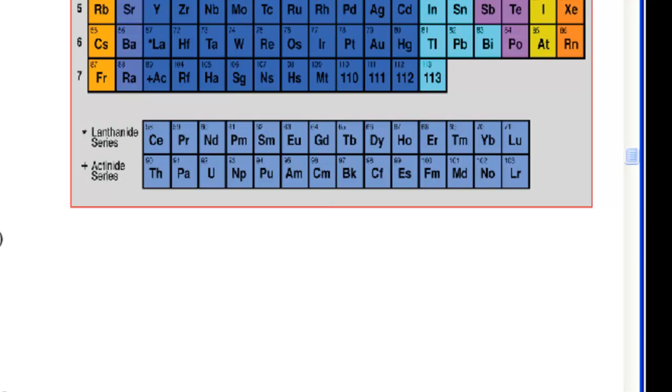And ultimately, it would like to get eight in its outer shell. And that's the octet rule. Like octopus, right? Octet equals eight, eight legs. So eight in its outer shell, so that means it has only a few electrons to play around with.